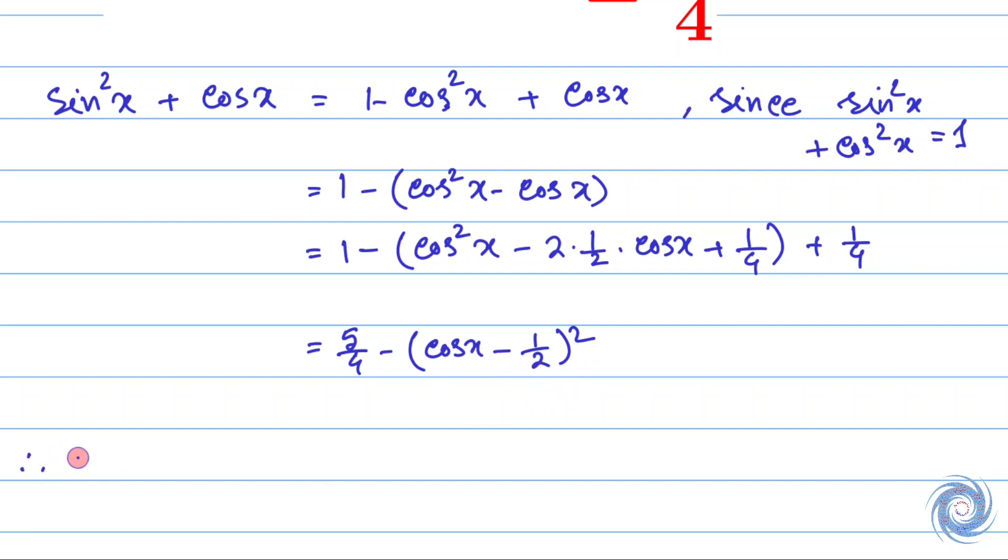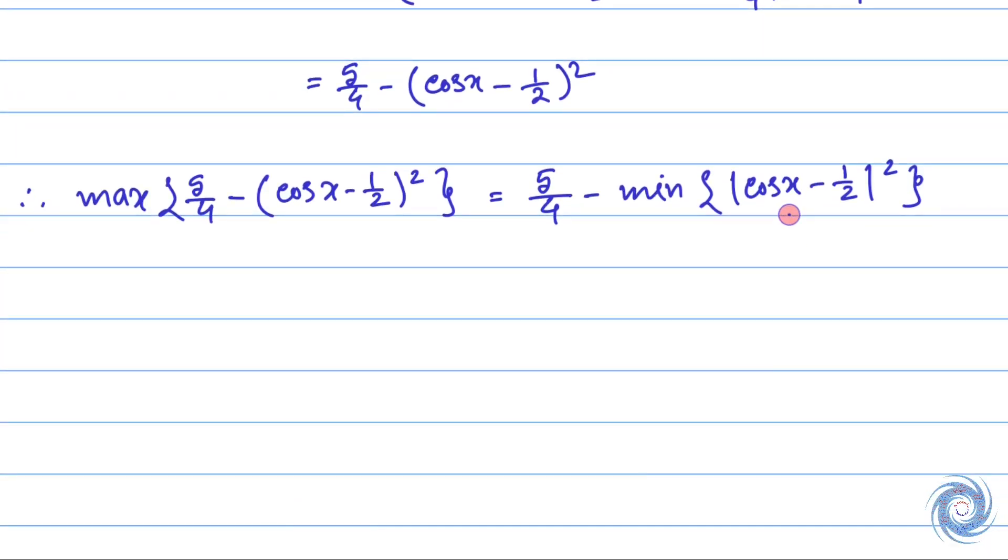So we have max{5/4 - (cos x - 1/2)²} = 5/4 - min{(cos x - 1/2)²}. And we know that for x = π/3, cos x = 1/2, and therefore cos x - 1/2 is equal to 0. So from here we have our result.